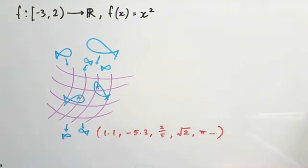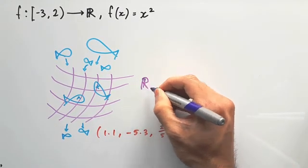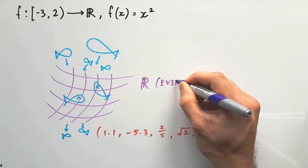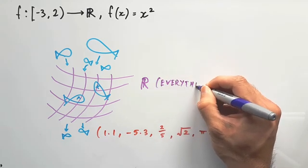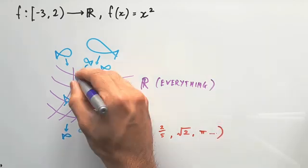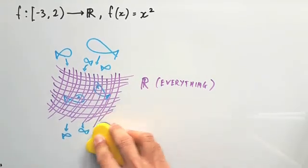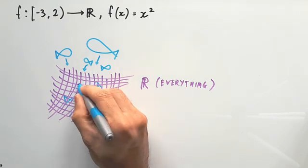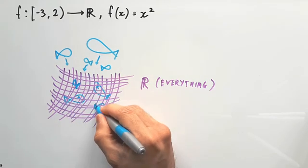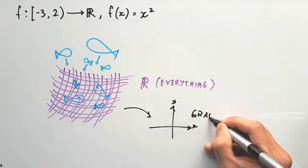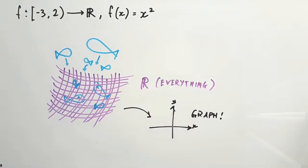In the case of our function, the codomain uses the capital letter R. This means real numbers, which in the context of math methods would mean everything that you would deal with, every kind of number. So this net would have very small holes in it, which means this net will catch everything, every type of fish, every type of number. And once you've caught these things, you want to then turn them into coordinates, which you can put on a graph. So let's have a look at that now.